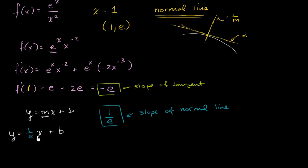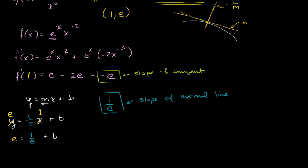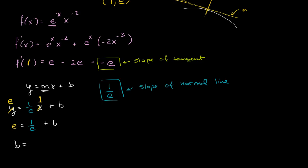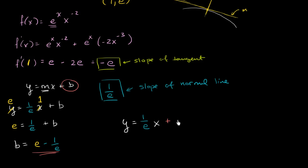We know that when x is equal to 1, y is equal to e. So we get e is equal to 1 over e plus b. Subtracting 1 over e from both sides, b is equal to e minus 1 over e. We could also write this as e squared minus 1 over e. So the equation of the normal line is y is equal to 1 over e times x plus e minus 1 over e. That right there is our equation of the normal line.